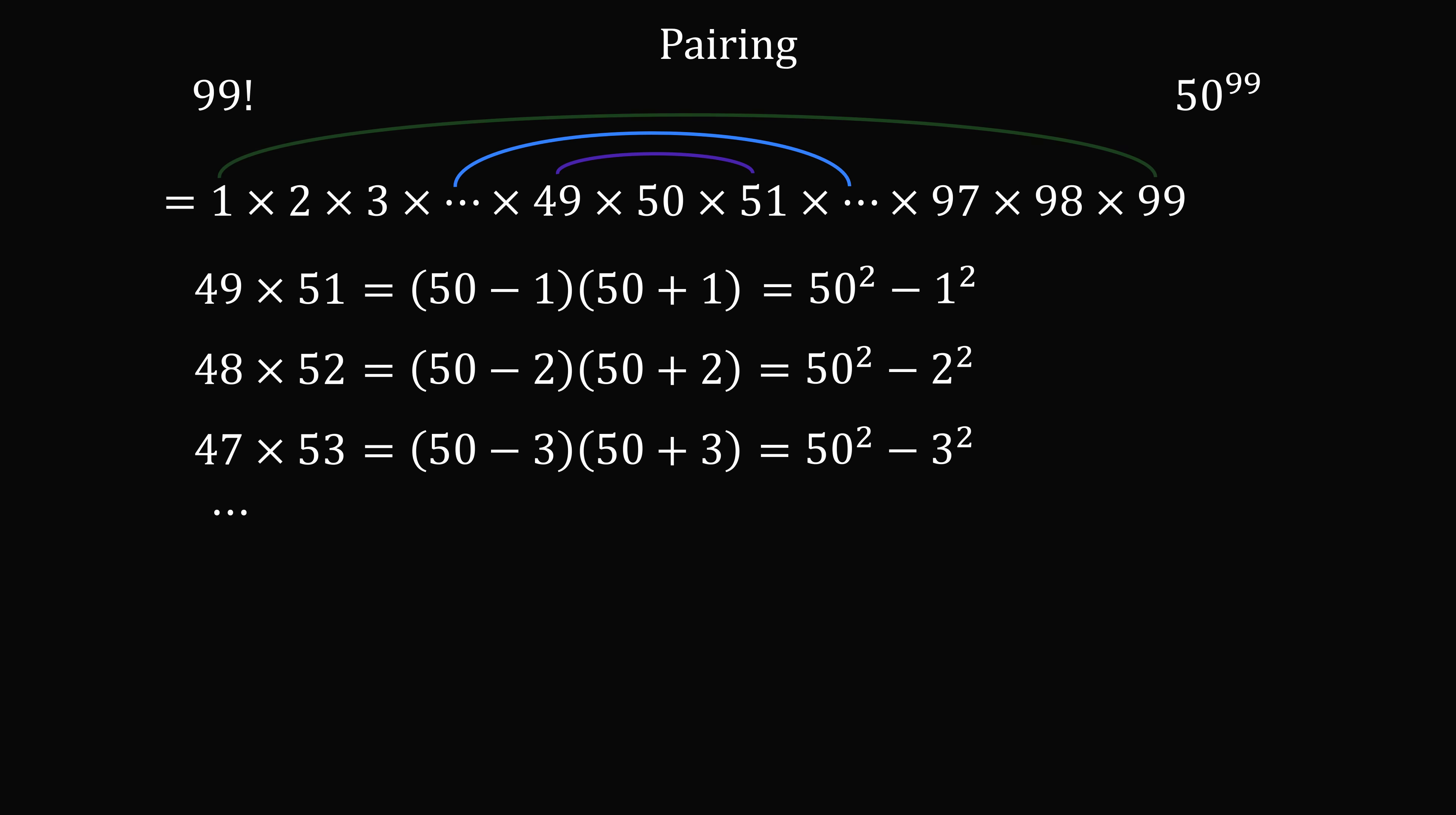So we can continue pairing all the way to the very last pair of 1 times 99, which is 50 minus 49 multiplied by 50 plus 49, which is 50 squared minus 49 squared. So how does this pairing help us?